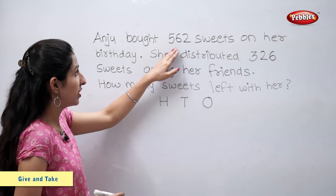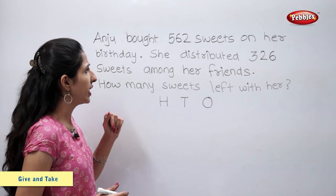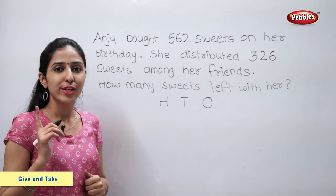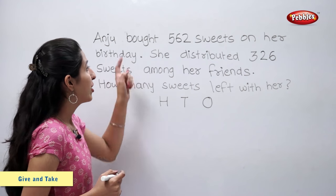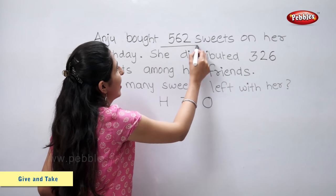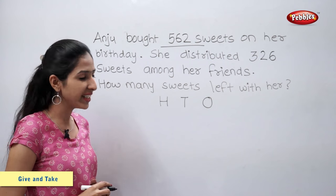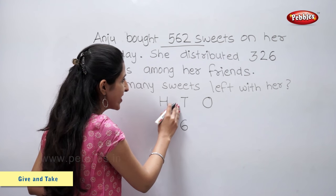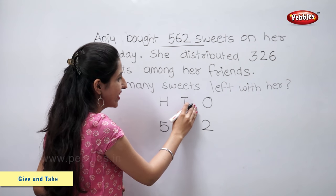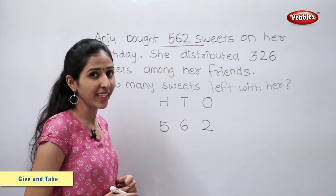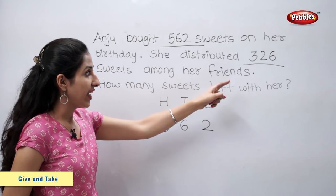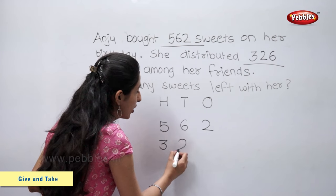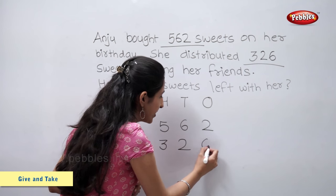Anju bought 562 sweets. She distributed 326 sweets. We have to find the number of sweets left with Anju, so we will subtract 562 minus 326. Five hundred and sixty-two means five hundreds, six tens and two ones. Three hundred and twenty-six means three hundreds, two tens and six ones.